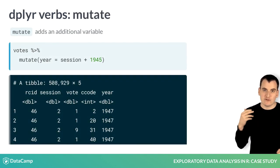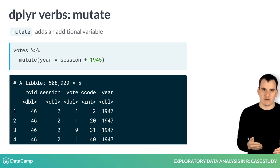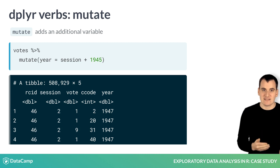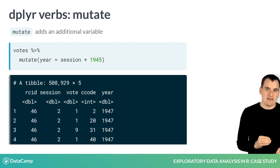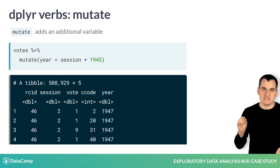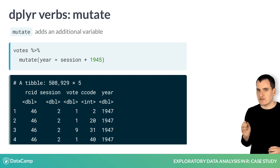You will also be using the mutate function. The session variable is hard to interpret, but if you know that the first session of the United Nations was held in 1946, you can use it to get the year each vote was cast, which is much more interpretable. To do this, you could pipe the data into the mutate function, where you can define your new year column as 1945 plus the session. Notice the new year column with the result.